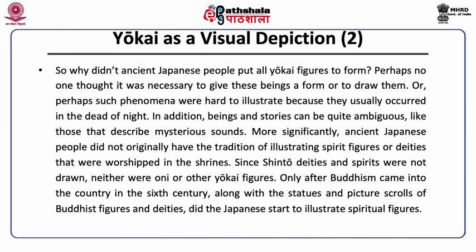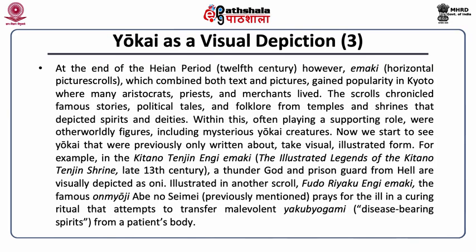Only after Buddhism came into the country in the 6th century, along with statues and picture scrolls of Buddhist figures and deities, did the Japanese start to illustrate spiritual figures. At the end of the Heian period, Emaki — horizontal picture scrolls combining text and pictures — gained popularity in Kyoto, where many aristocrats, priests, and merchants lived. The scrolls chronicled famous stories, political tales, and folklore from temples and shrines that depicted spirits and deities, with otherworldly figures, including mysterious Yokai creatures, often playing a supporting role.